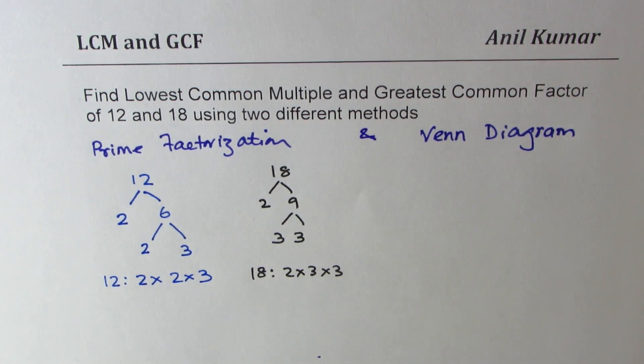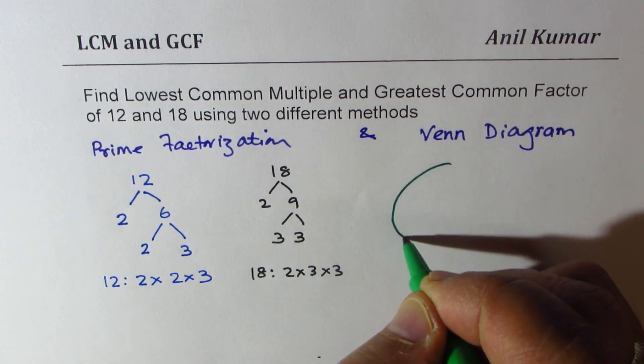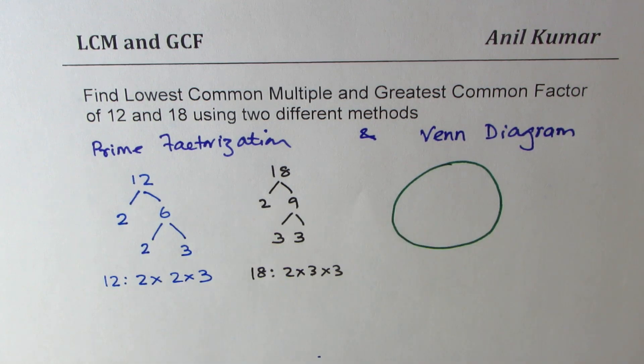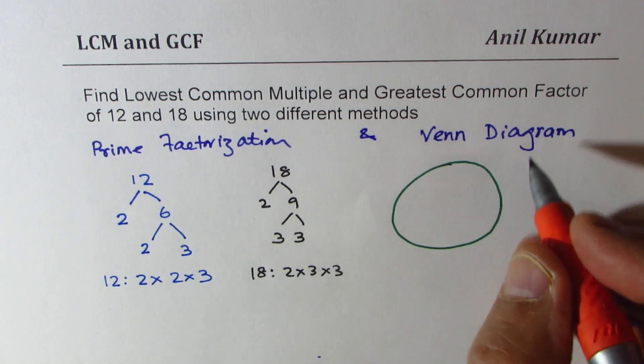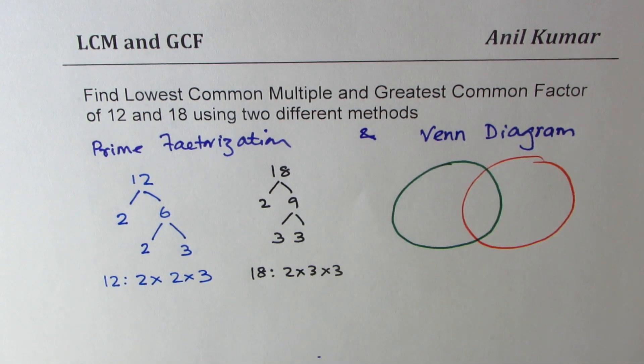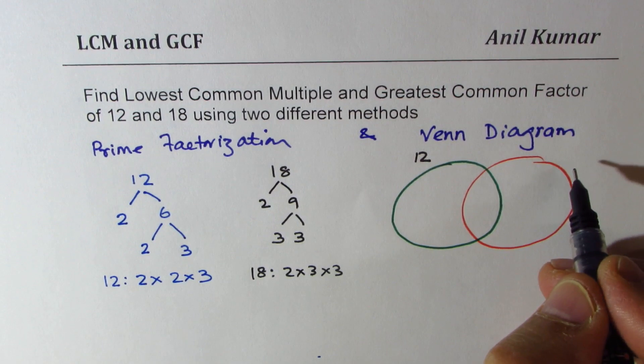From these numbers we can make a Venn diagram. Let me make circles indicating prime factors of 12 and another circle writing prime factors of 18. We have these two circles here. This represents prime factors of 12, that for 18.